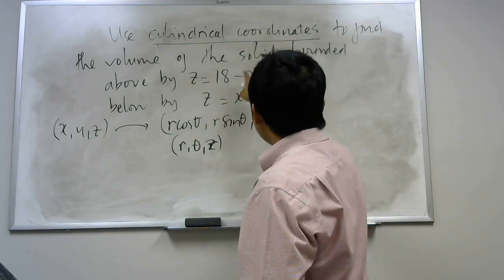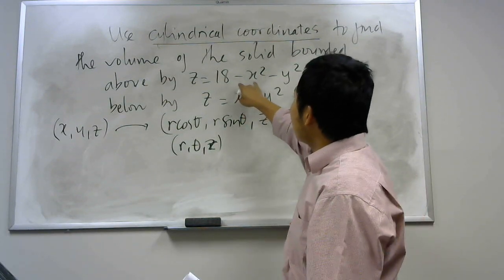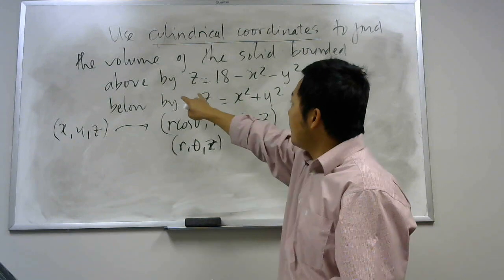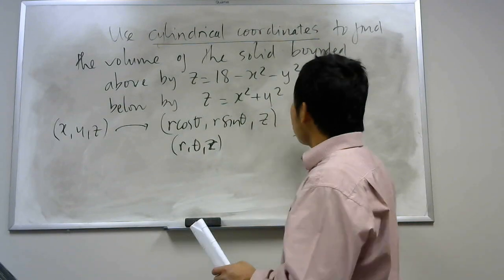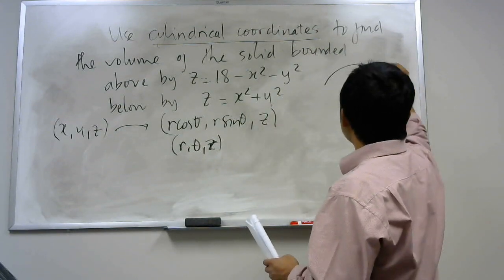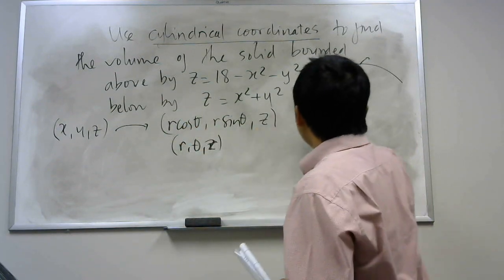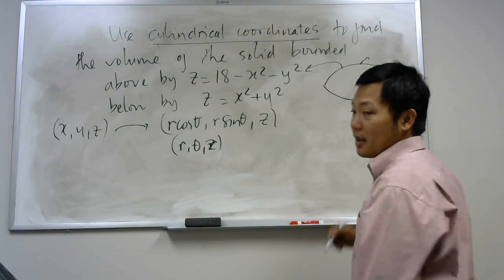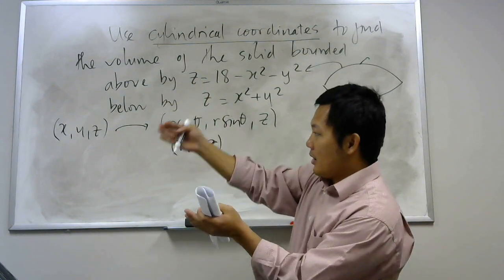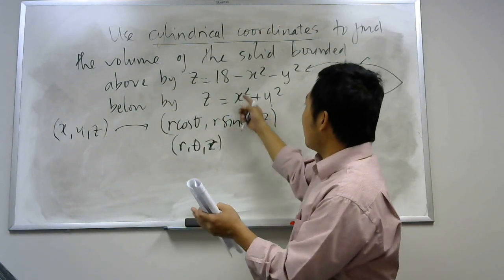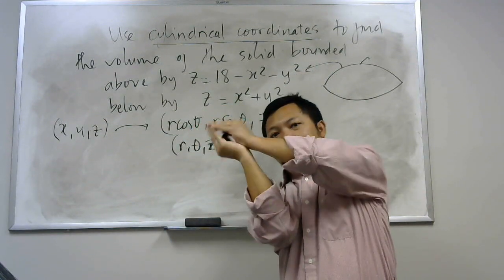And here, usually when we have such a problem, we have to graph the picture. But in this case, it says our solid is bounded above by this surface z = 18 - x² - y², and below by this surface z = x² + y². So if you consider in three dimensional space, you will see some kind of solid above by this and then below by this. So you might have something like this, and that is our solid.